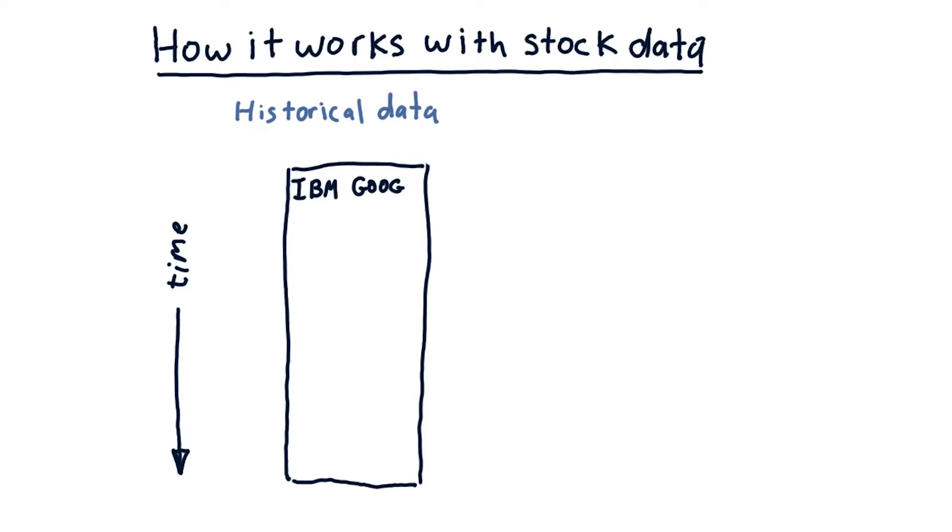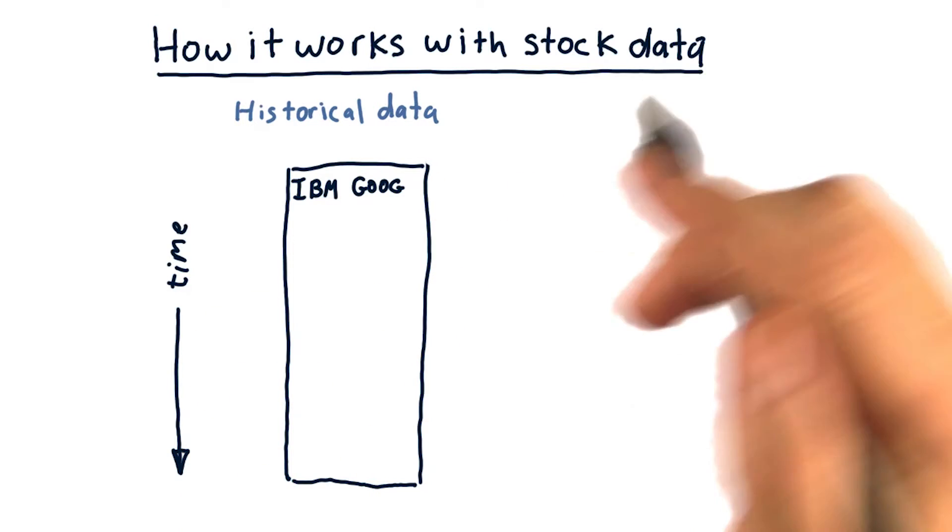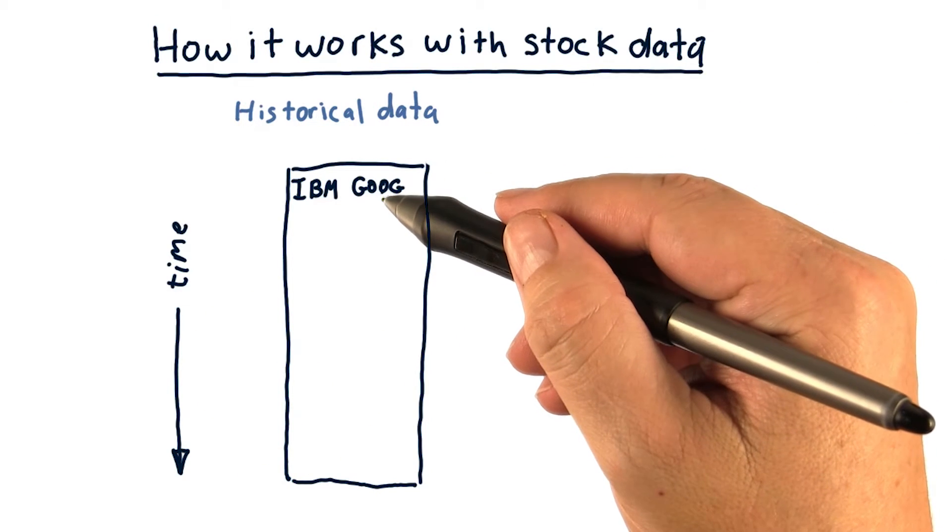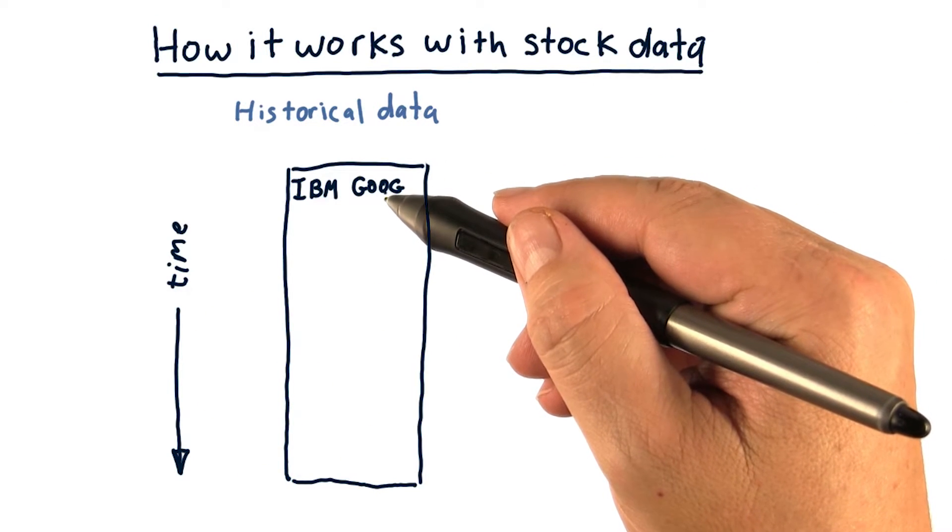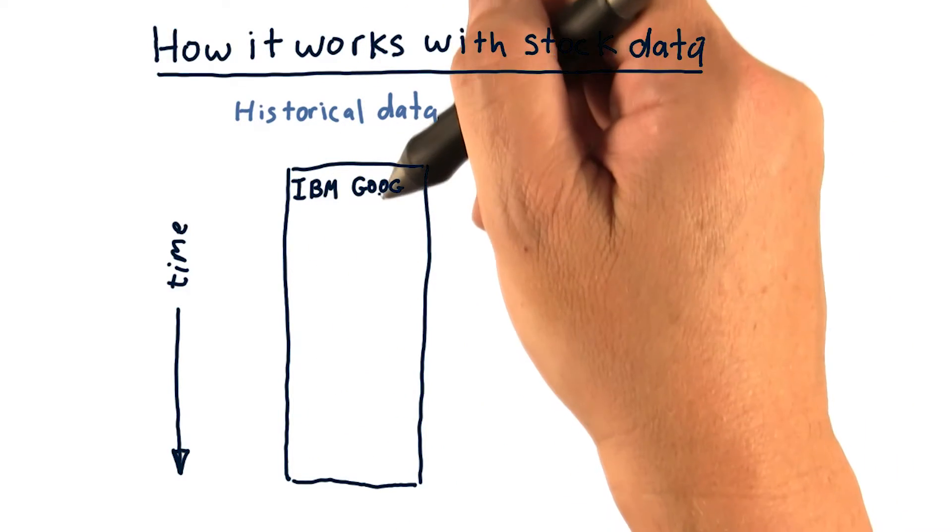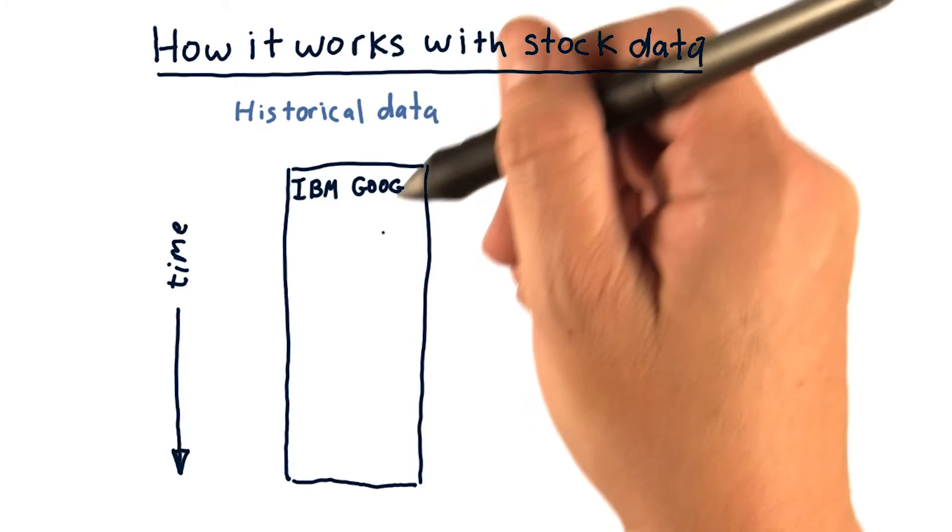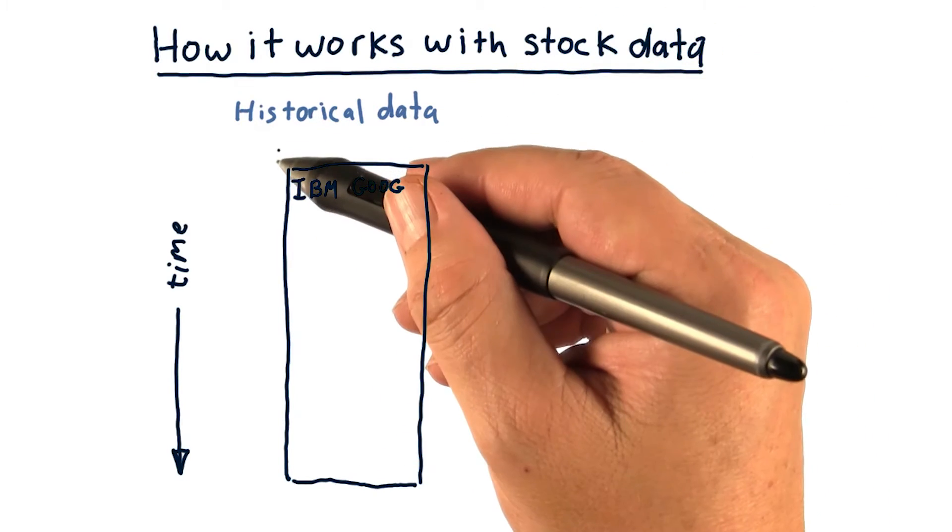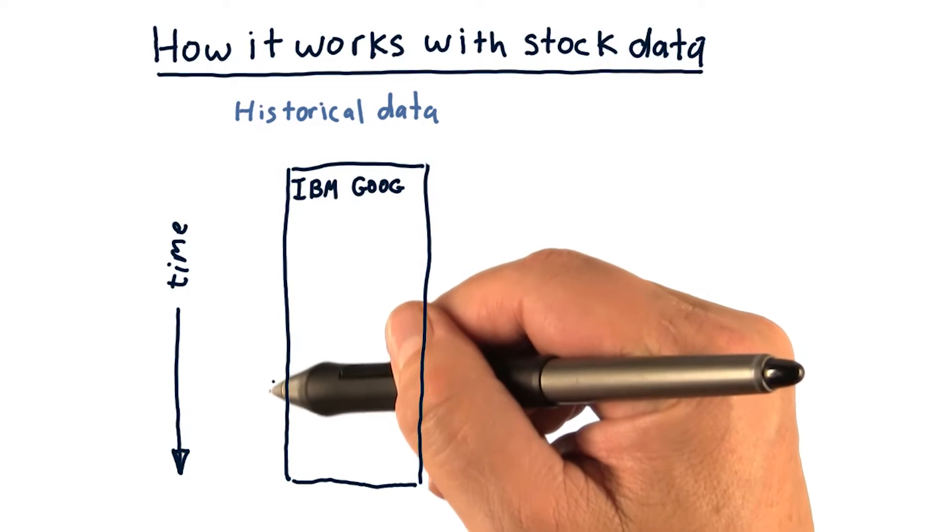Let's consider how we can use this same approach now for stock data. This is one of our pandas dataframes that contains some factors or features of stocks. And it's arranged in the usual way, where each column represents the value of the feature for a particular stock. And time goes downward, essentially.